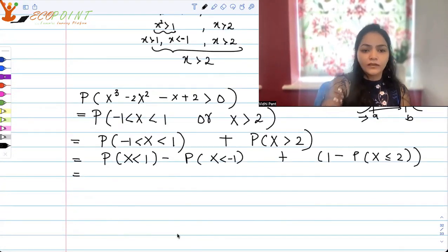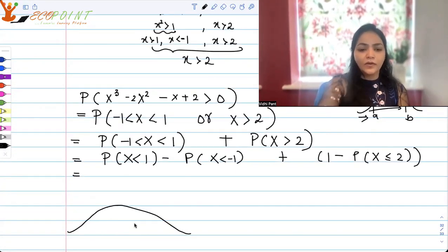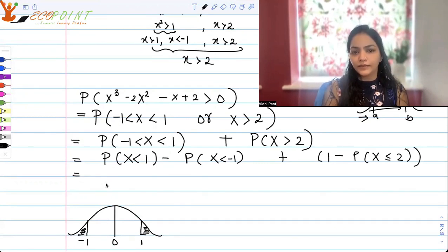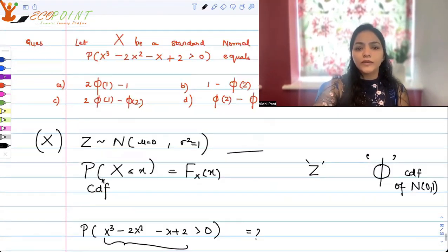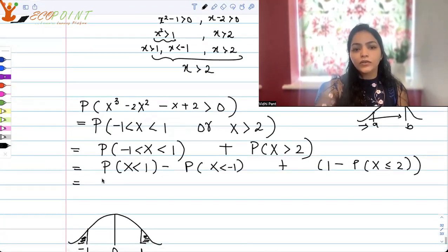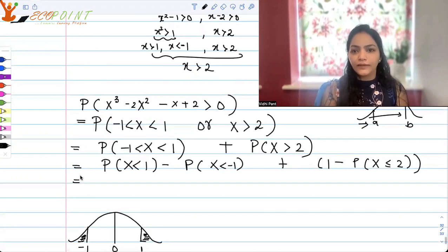Now standard normal is symmetric around 0. It's symmetric around 0. So what do you mean by the symmetricity? It basically means that if 1 is here and -1 is here, the area on the right of 1 is same as the area on the left of -1. Now in your options, can you see -1 anywhere? No, I can see 1 and 2 but not -1. So let's try to write everything in terms of 1 and 2.